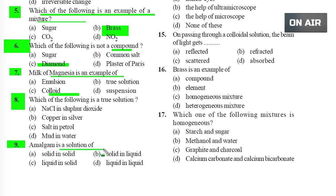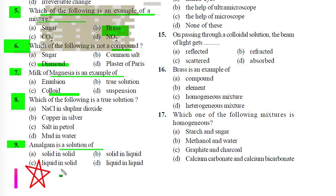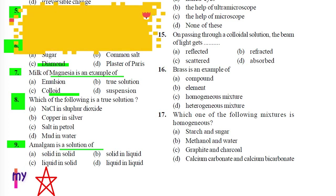Question 9: Amalgam is a solution of: A) Solid in solid, B) Solid in liquid, C) Liquid in solid, D) Liquid in liquid. Correct answer is C, because amalgam is a solution of mercury in metal.